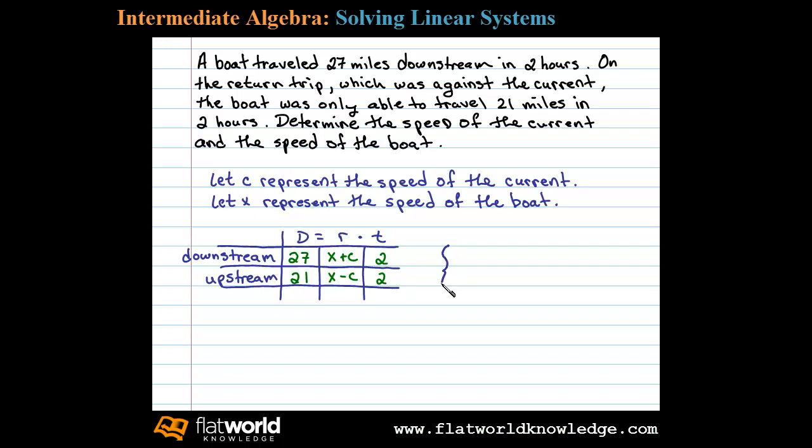...we can set up a linear system. 27 equals the rate, which is X plus C, for the trip downstream in two hours. So distance equals rate times time. Now for the trip upstream we can write 21 equals X minus C times 2. Distance equals rate times time, and this is our setup so we can solve this linear system any way we choose.